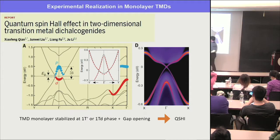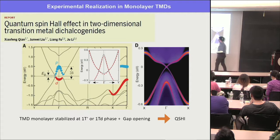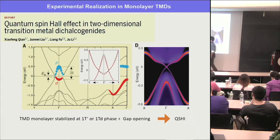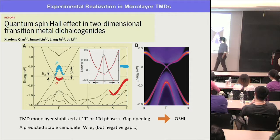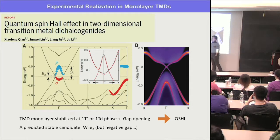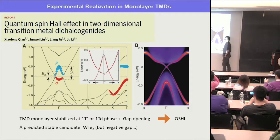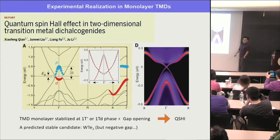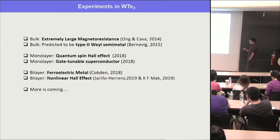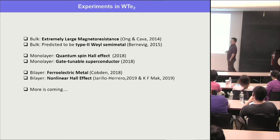They found that tungsten ditelluride stabilized in the 1T' (or 1Td) structure is a quantum spin Hall insulator — plus gap opening gives the topological phase. Their calculation found a negative gap initially, but at that energy scale you can't trust the calculation anyway. What really matters is what experiments show. There have been many interesting recent discoveries in these materials: extremely large non-saturating magnetoresistance, type-II Weyl semimetal prediction for the bulk, and more.